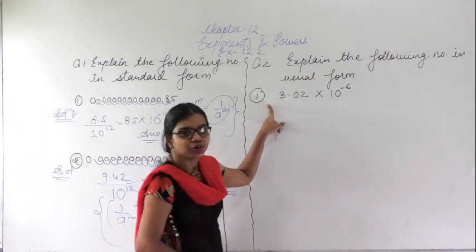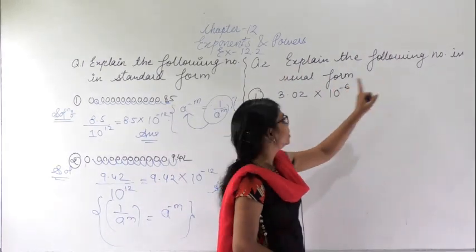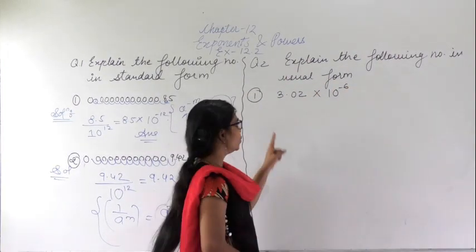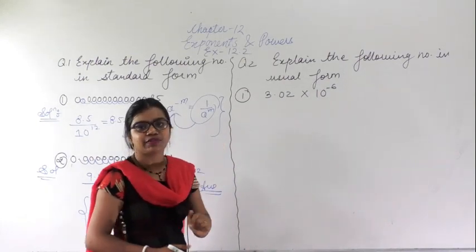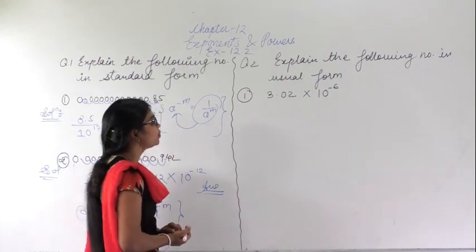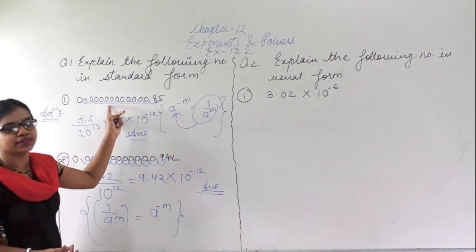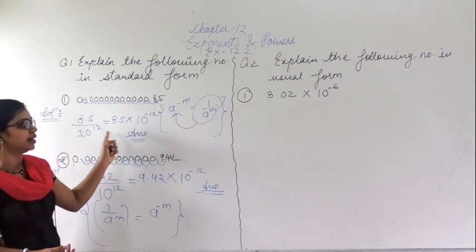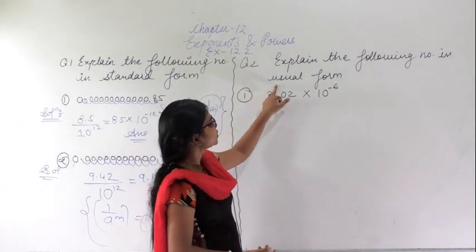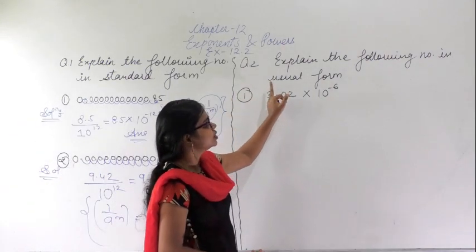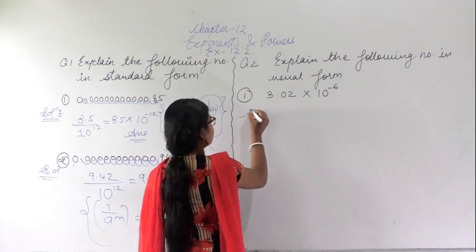Similarly, in the next question it says: explain the following number in the usual form. This number is in the standard form and we have to convert it into the usual form. Just as before we converted from usual form to standard form, here we will do the reverse — convert from standard form to usual form.